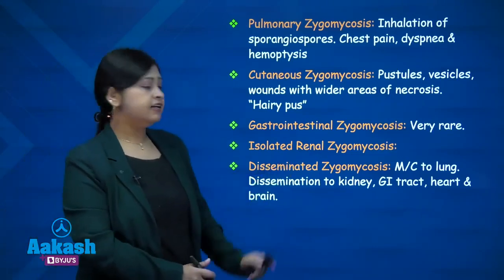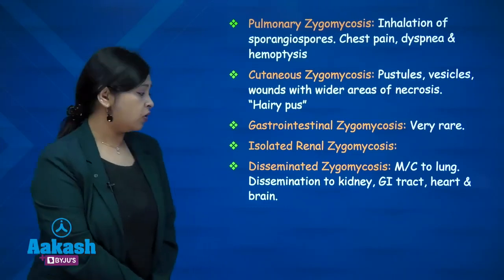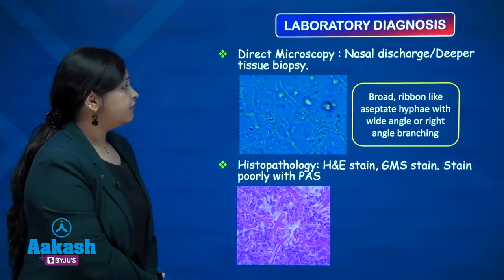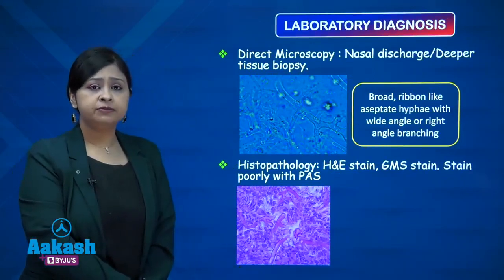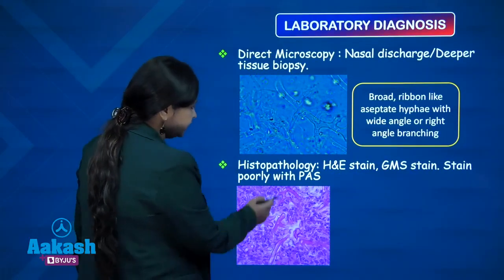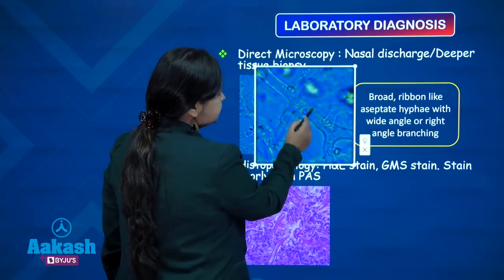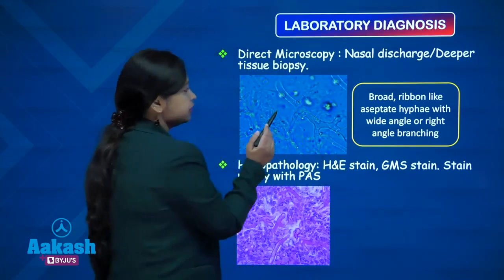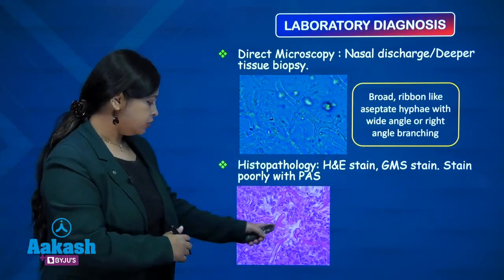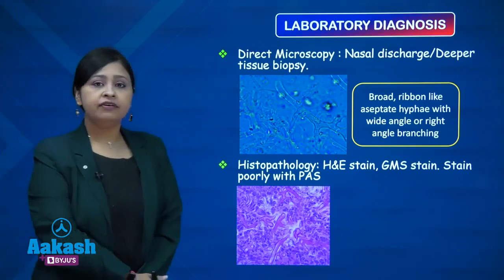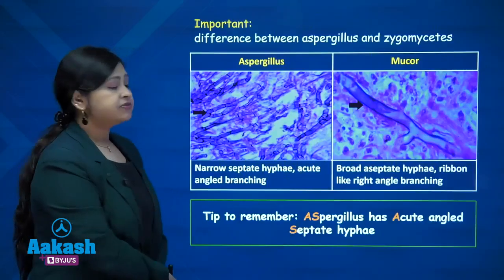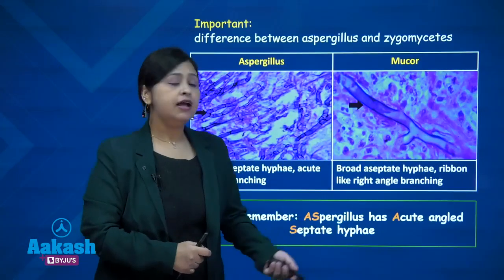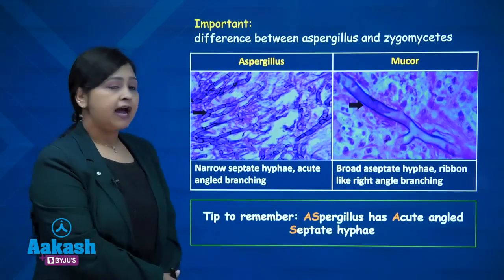Other manifestations include isolated renal zygomycosis and disseminated infection, most commonly to the lung with possible spread to kidney, GI tract, heart and brain. On laboratory diagnosis, nasal discharge or biopsy shows broad ribbon-like aseptate hyphae with wide-angle or right-angle branching, indicating zygomycosis. Aspergillus shows narrow septate hyphae with acute angle branching; mucor shows broad aseptate hyphae with ribbon-like appearance and right angle branching.